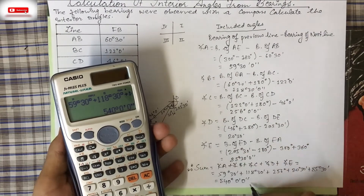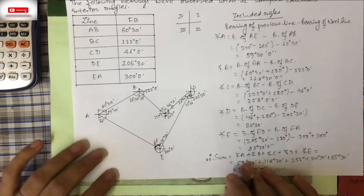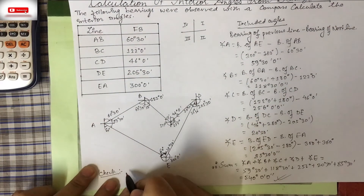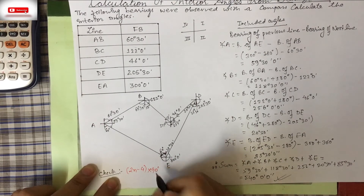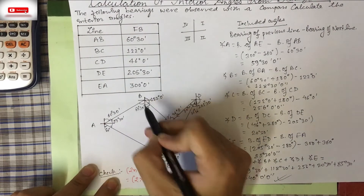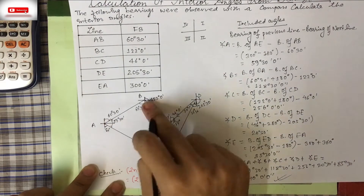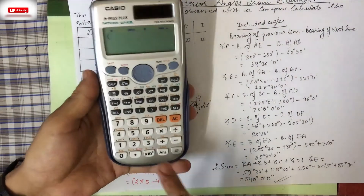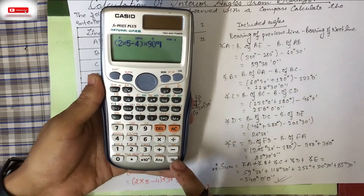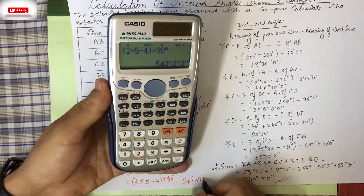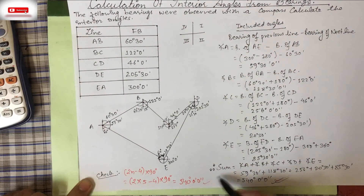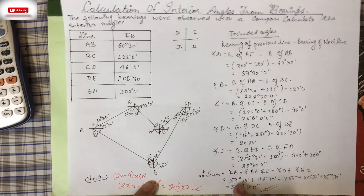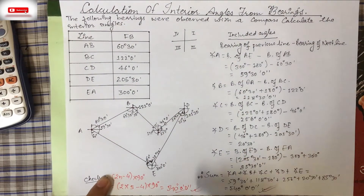We check this result using the formula (2n − 4) × 90°, where n is the number of sides. Here n = 5, so (2×5 − 4) × 90° = 6 × 90° = 540°. Our answer of 540° matches exactly, confirming our solution is correct.